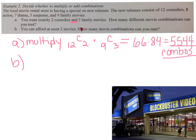Part B. You can only afford at most 2 movies. How many movie combinations could you rent? So you could rent 0 movies, right? That's one situation. Or you could rent 1 movie, or you could rent 2, because it says at most 2. So we need to add each of these groups together.